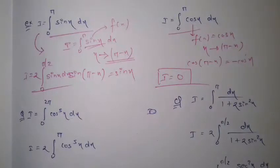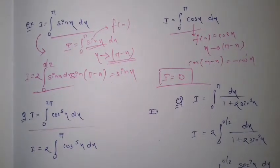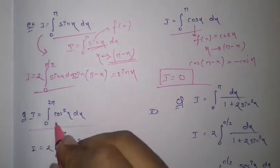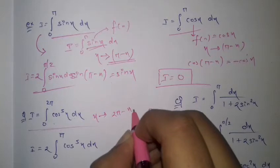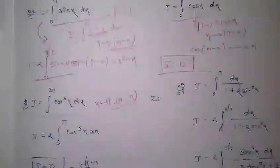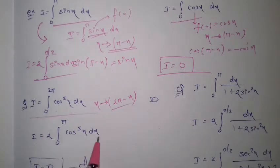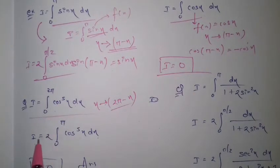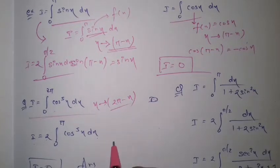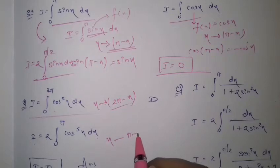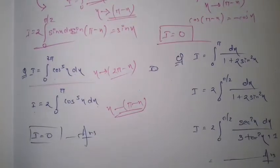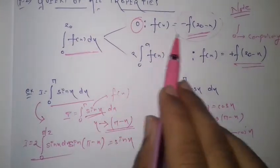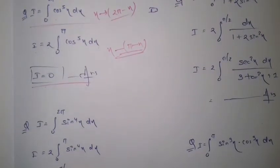Look at this question: ∫₀^(2π) cos⁵x dx. It's not easy to solve using indefinite integration methods. First check by replacing x with 2pi minus x — the function cos⁵x doesn't change. So we can write I = 2 ∫₀^π cos⁵x dx, halving the upper limit. Now replace x with pi minus x: this gives -cos⁵x, so I becomes 0.